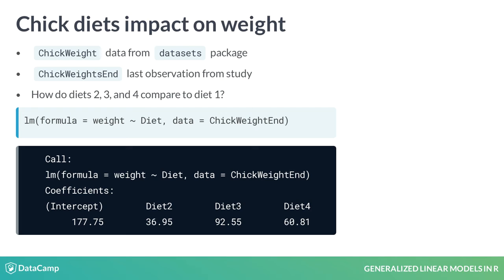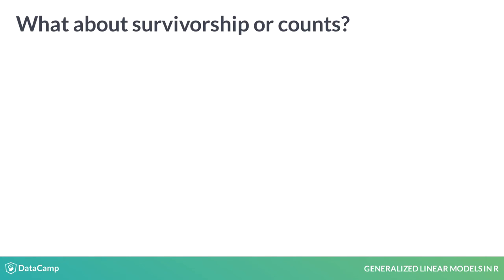This model estimates a global intercept, which corresponds to the average weight of a chick receiving the first diet, as well as the differences for the other diets. In this case, diets two, three, and four had chicks with higher weights than diet one by the amounts shown on the screen. However, what about the other end points? For example, if we had survival or count data, what would we do?